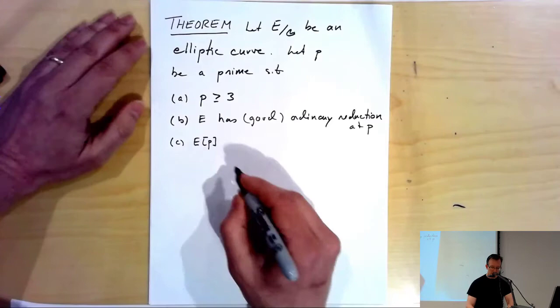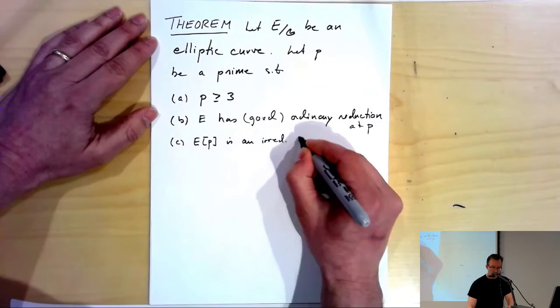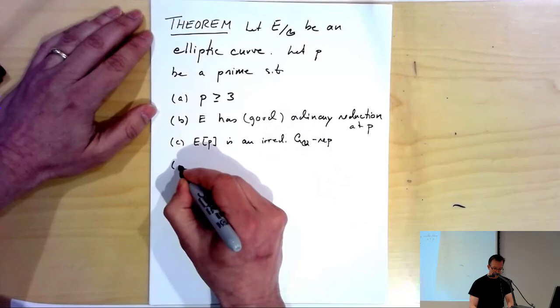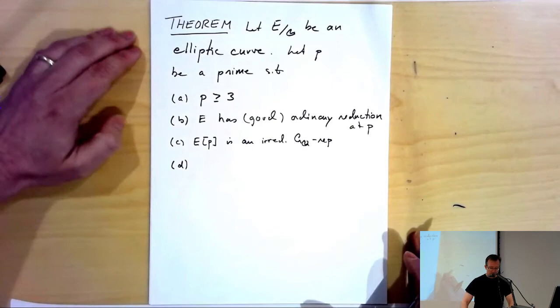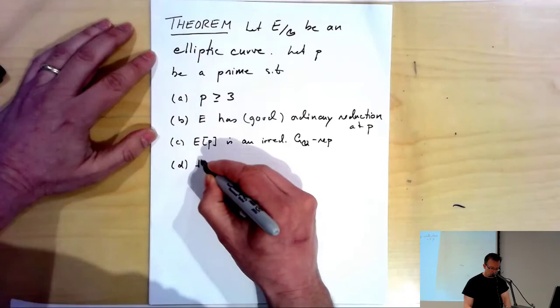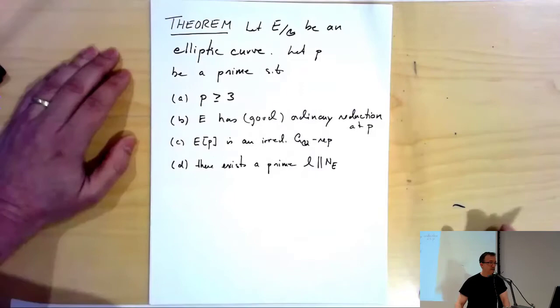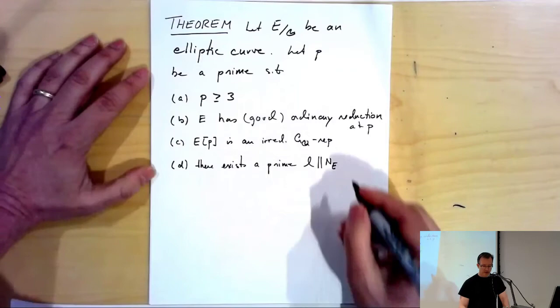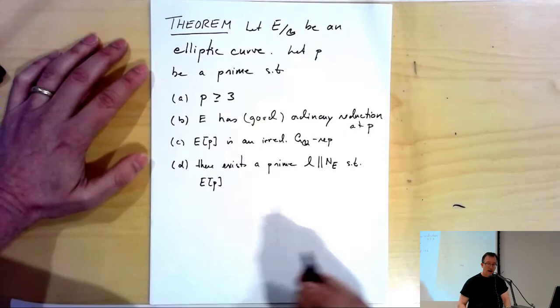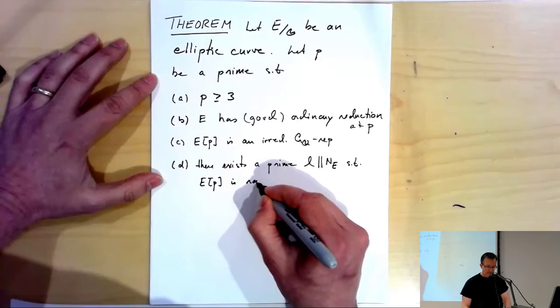The action of the Galois group on the p-torsion points is irreducible, so E[p] is an irreducible G_Q representation. And now there's one auxiliary hypothesis we haven't really seen yet: there exists a prime l that exactly divides the conductor to order one, which is equivalent to saying there exists a prime l of multiplicative reduction for the elliptic curve such that the Galois action on the p-torsion points is ramified at l.